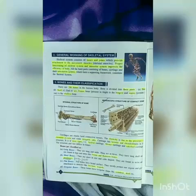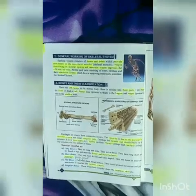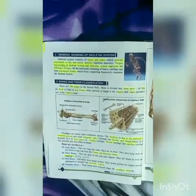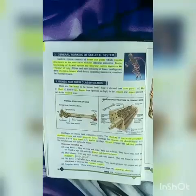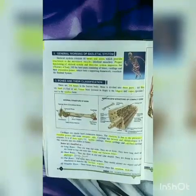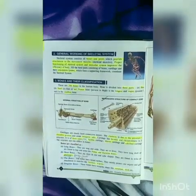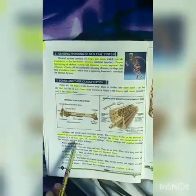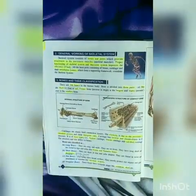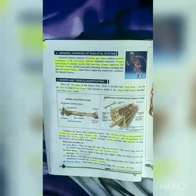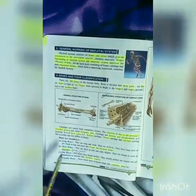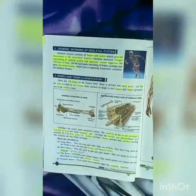Cartilage consists of elastic hard connective tissue. The elasticity is due to the presence of chondroitin protein and some inorganic salts. Cartilage has lacunae and chondroblasts in its structure. It is of three types: hyaline cartilage, fibrous cartilage, and elastic cartilage. The structure and size differ in bones.